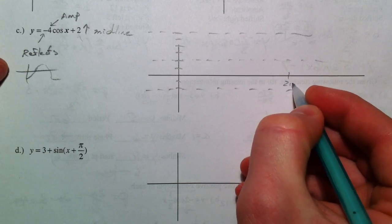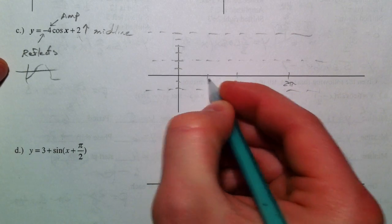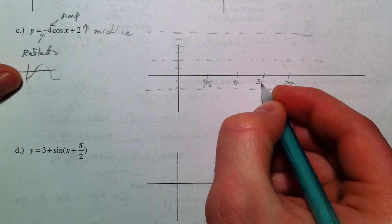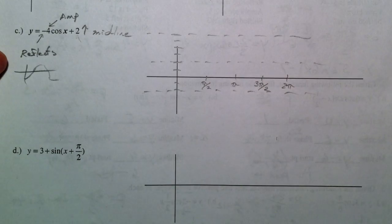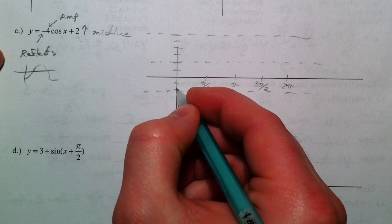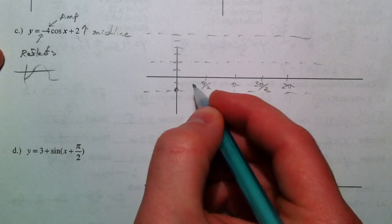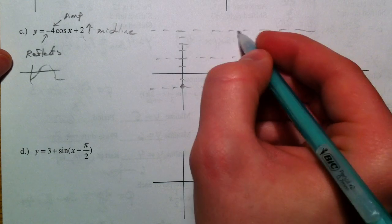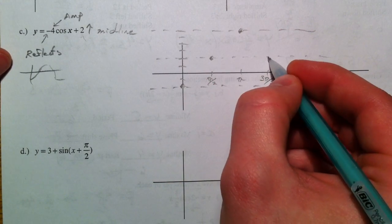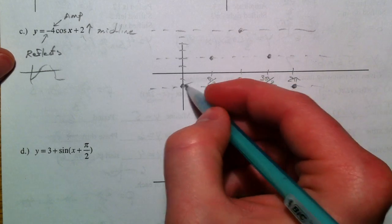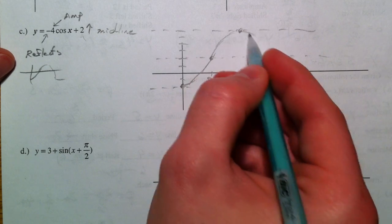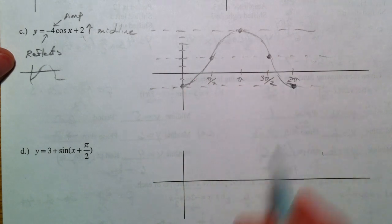The period is still 2 pi. We talked about how it's a cosine graph that was reflected, so it's going to start at the valley at the bottom. It's going to repeat from there. Halfway in between, it's going to be at the peak. So we plot our 5 points, and there you have it.